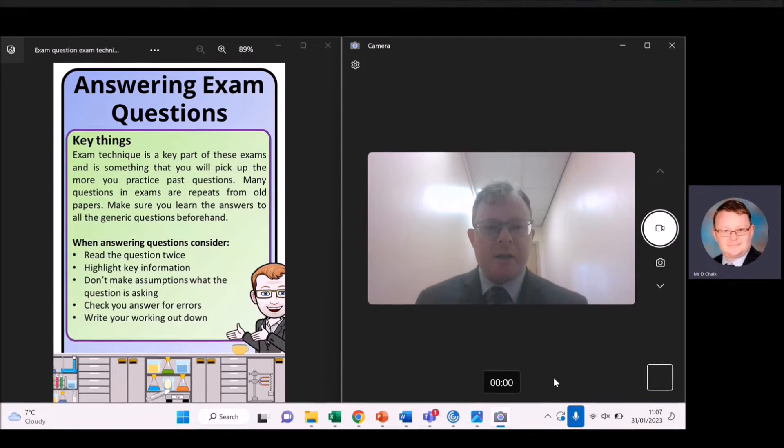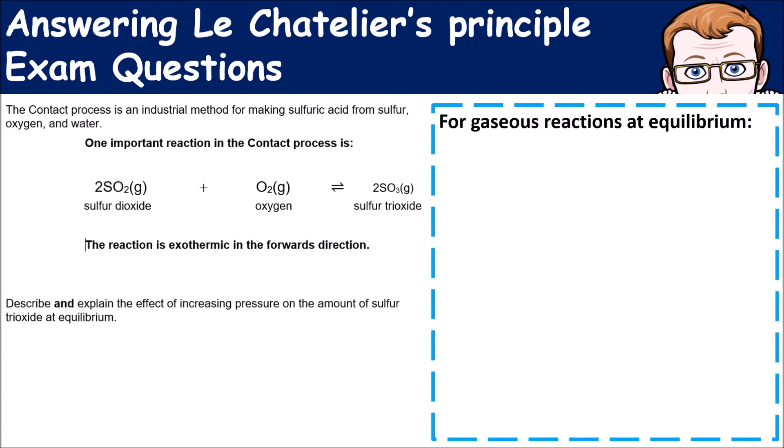Let's have a look at a question that relates to Le Chatelier's principle. If you remember, Le Chatelier's principle talks about how we can change conditions in an equilibrium - in a reversible reaction that's sealed so nothing is going in and nothing's getting out - and how that can affect the amount of products or reactants that are made. In this question, the contact process is an industrial process used to make sulfuric acid from sulfur, oxygen and water. The important bit is it gives you the chemical equation and tells you that the forward reaction is exothermic.